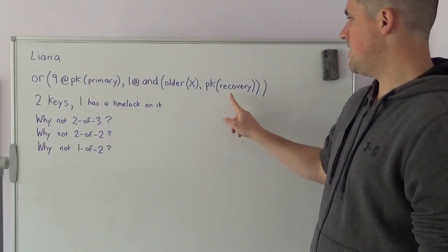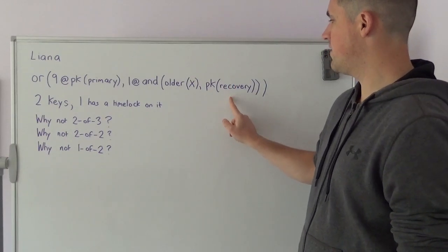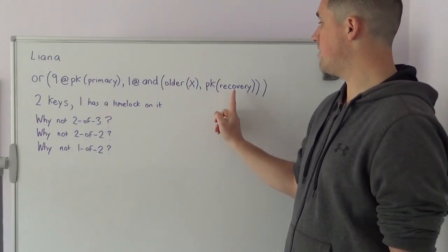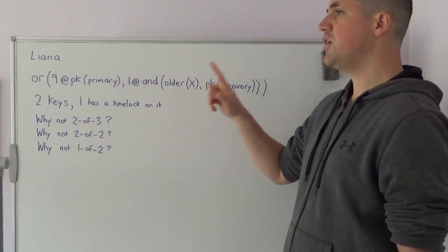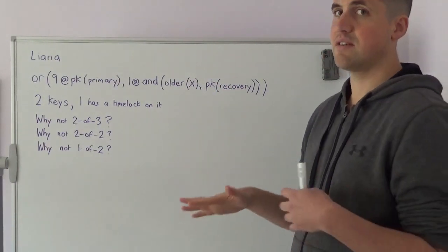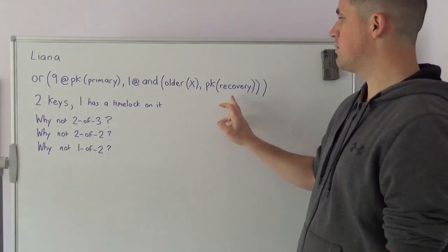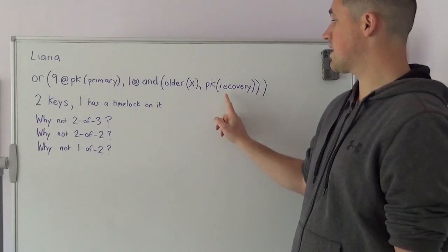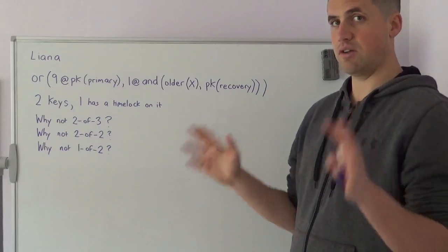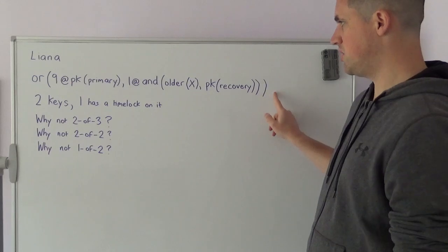In the case that you detect an attacker has gained access to your recovery private key, you move your funds to a different setup, and because this recovery key is time-locked, you have until the time-lock expires to move your funds away from this address. If the time-lock wasn't there, the recovery key could be used at any point, and if the attacker gained access to the recovery key, they could move the funds instantly to address their control and you've lost your funds. That's why you would be interested in using such a policy.